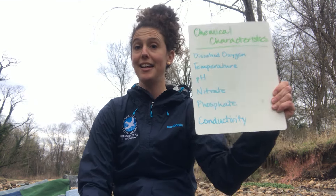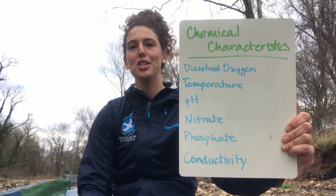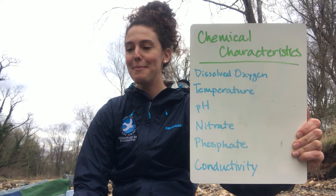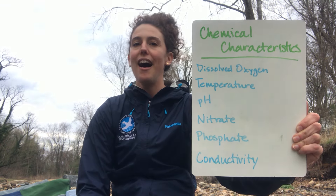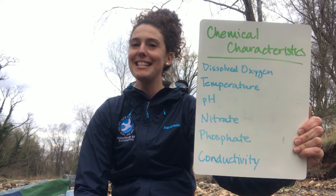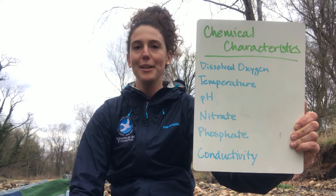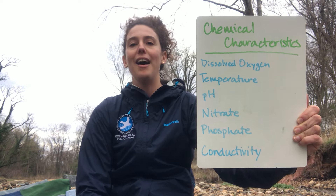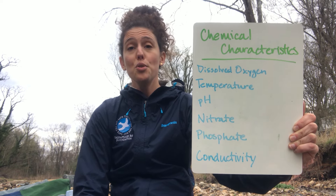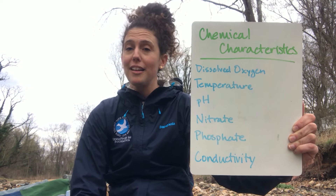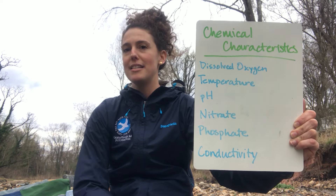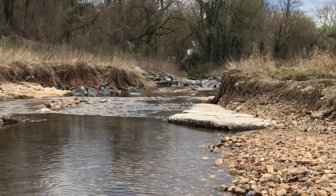The chemical characteristics I'm going to look at today include dissolved oxygen — the amount of oxygen dissolved in the water for fish and other invertebrate species found in these rocks — temperature, which tells us about the season and who might be migrating or hibernating, pH, which controls a lot of other chemical factors, nitrates and phosphates, which are nutrients that can unfortunately lead to dead zones in the Chesapeake Bay, and conductivity, which I'm also testing today since we're in a freshwater stream.